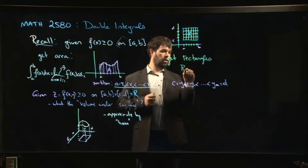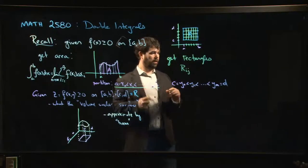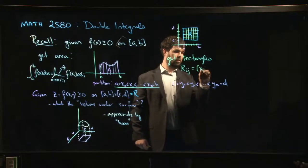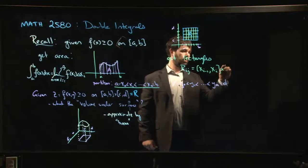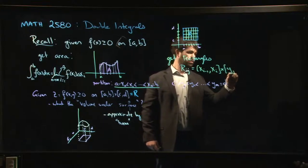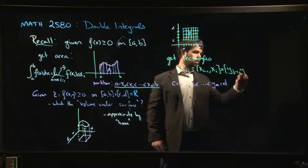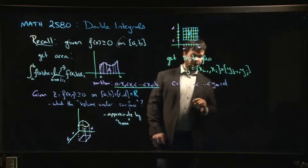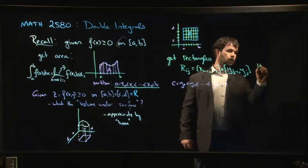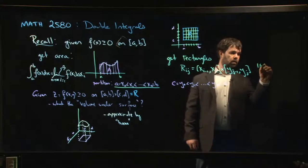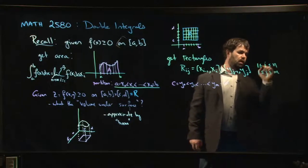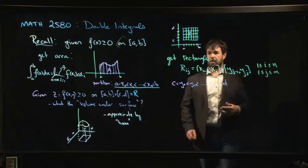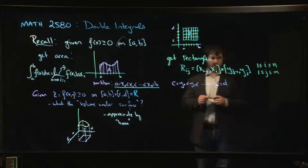So we get these rectangles. We might call them rij. And so this is, it's going to look, if we wanted to specify what it is, it's still a product of two intervals. It looks something like that. Where i is between 1 and n, j is between 1 and m. So there's m times n of these rectangles. So you get a whole bunch of rectangles.